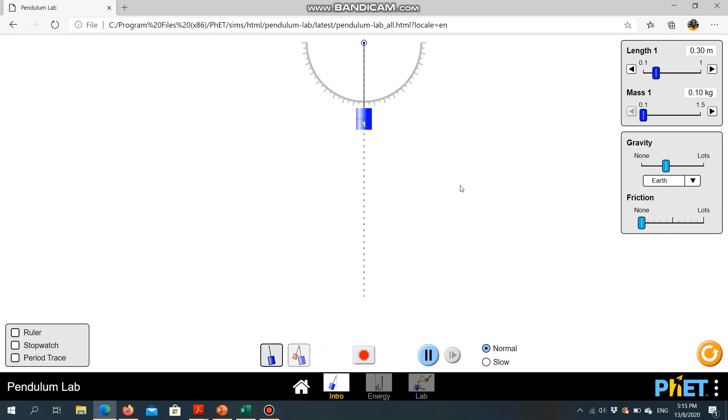The period is one complete back and forth movement of the pendulum. Starting in the center of the swing, when the pendulum reaches opposite end, goes through the center, and it's coming back through the center in the same direction at which you start, that is one oscillation. The period trace allows you to look at what is one oscillation.